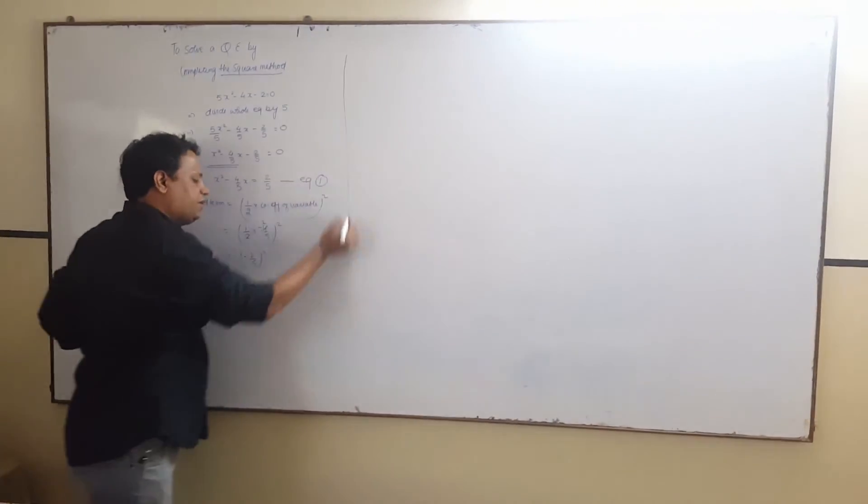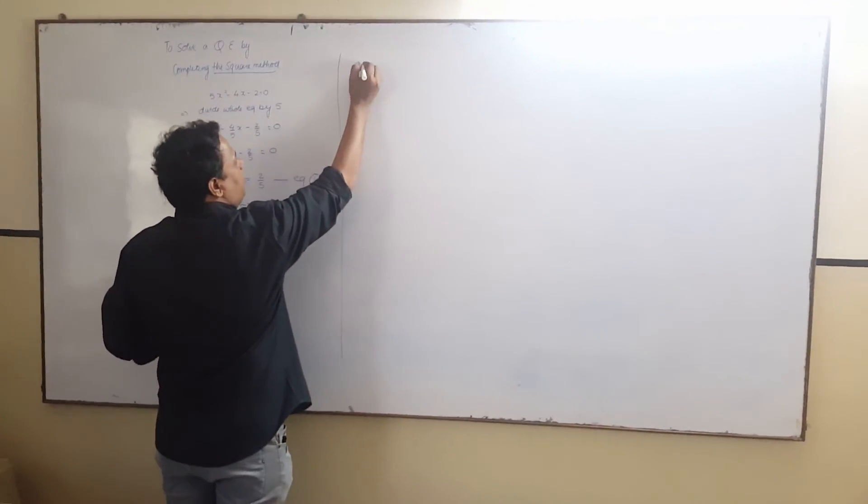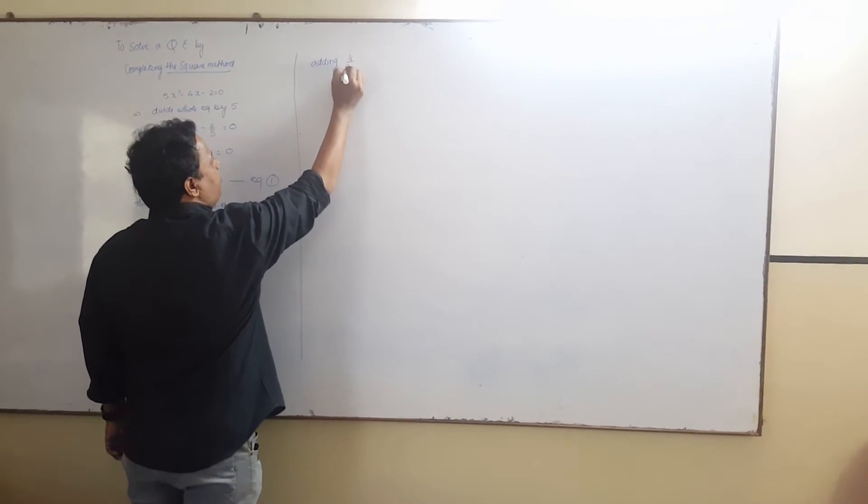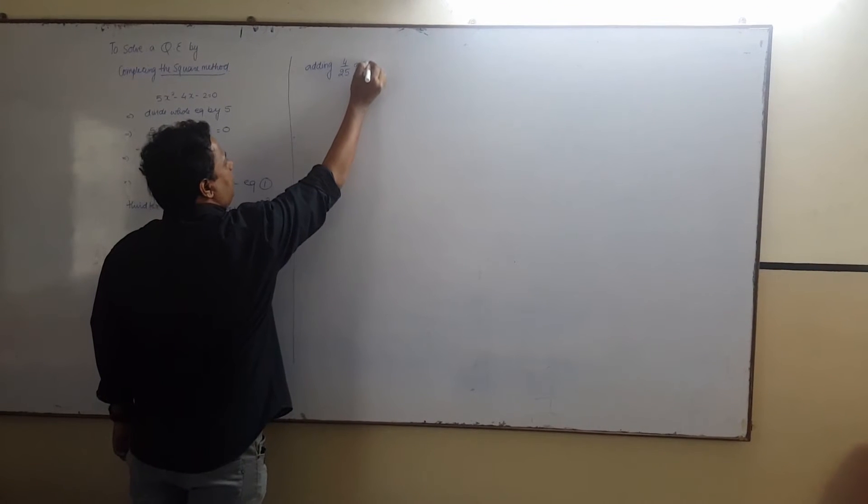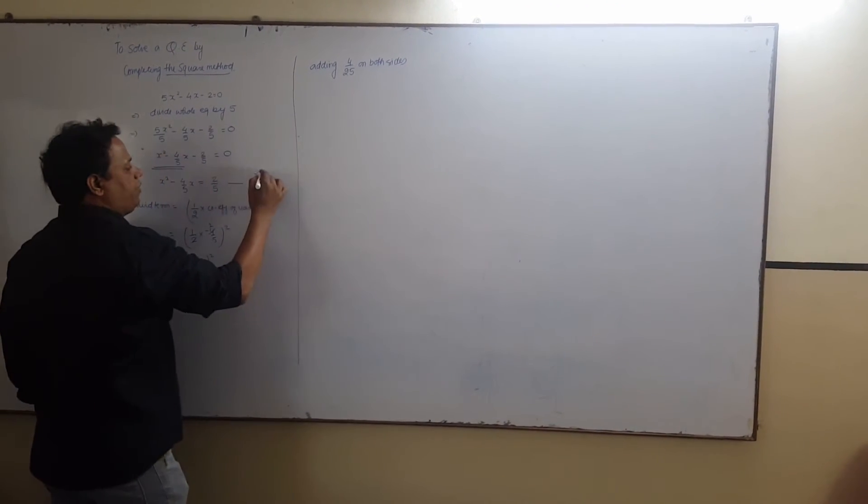See the second part. Adding 4 upon 25 on both sides of equation 1.